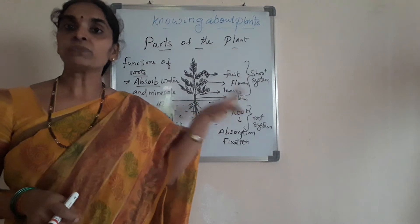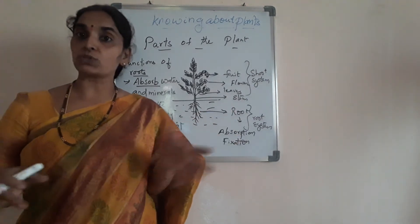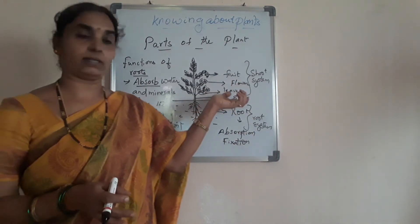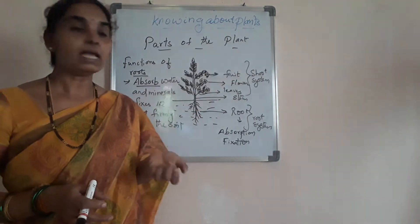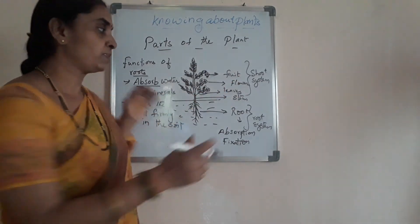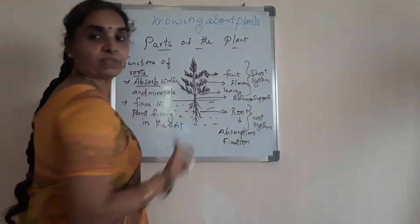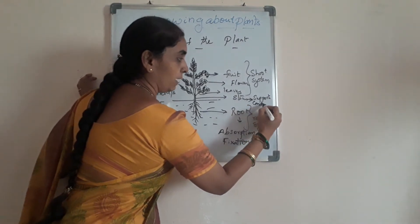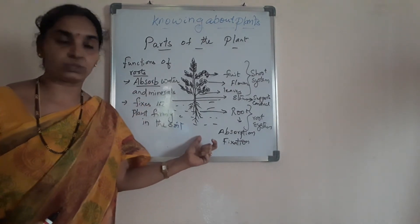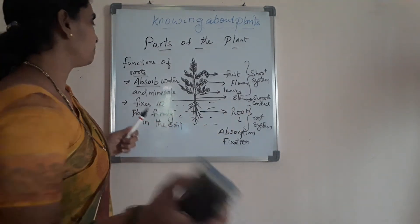If you look at root systems, there are different types of root systems in plants. Before going into detail about the root system, I will give a short note about all the other parts of the plant. The stem bears all the other parts of the plant like leaves, flowers, and fruits. It conducts the water and food material from the roots to other parts of the plant. The water absorbed by the root is conducted by the stem.